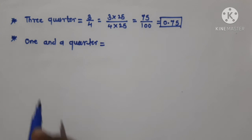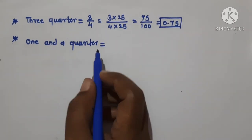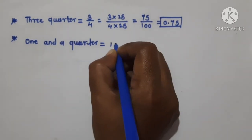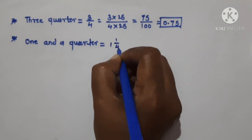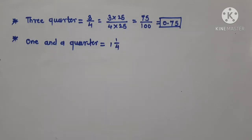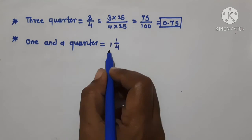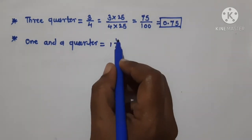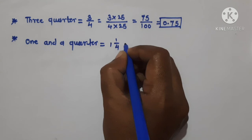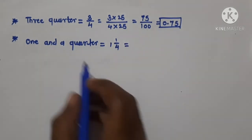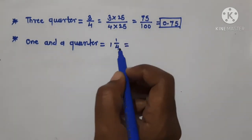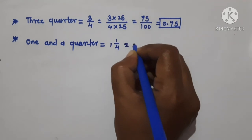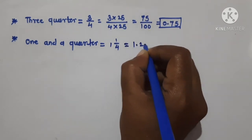Students, now let us see about 1 and a quarter, which means 1 and 1 upon 4. Let us convert this fraction into decimal form: 1 and a quarter is equal to 1.25.